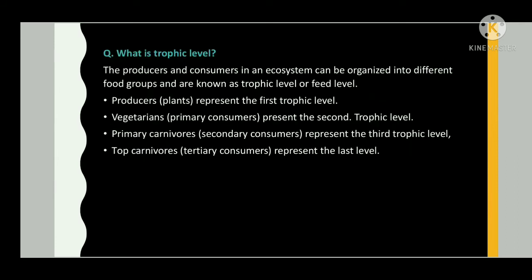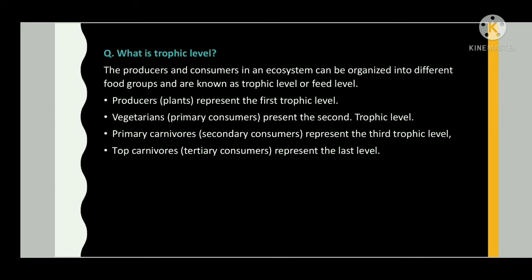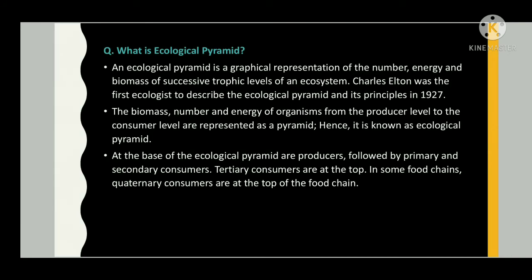What is a trophic level? The producers and consumers in an ecosystem can be organized into different food groups known as trophic levels. Producers (plants) represent the first trophic level; primary consumers (vegetarians) represent the second; primary carnivores (secondary consumers) represent the third trophic level; and top carnivores (tertiary consumers) represent the last level.